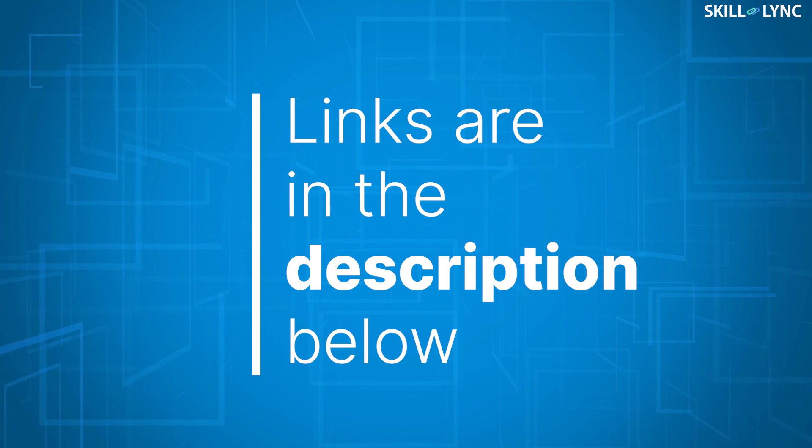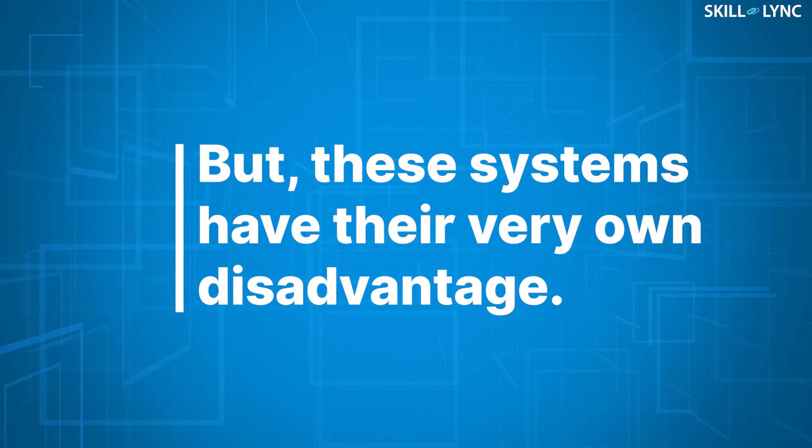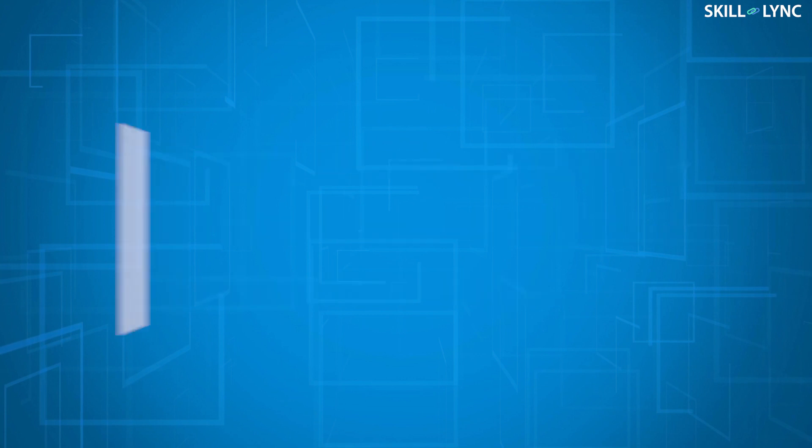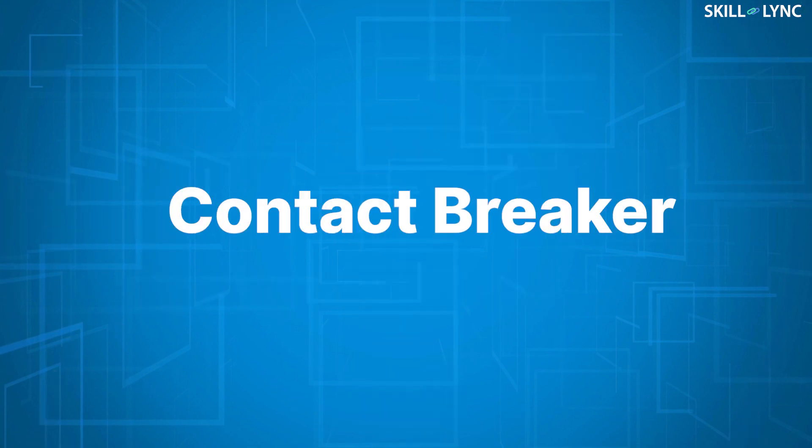In our previous videos, we learnt about battery coil and the magneto-ignition systems, but these systems have their very own disadvantage. Do you guys remember what it is? Well, it's the contact breaker.